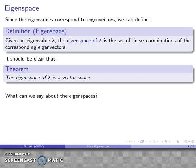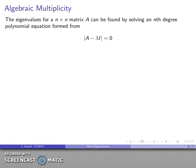Now that we know that the eigenspace is a vector space, is there anything else we can say about it? Well let's think about that.